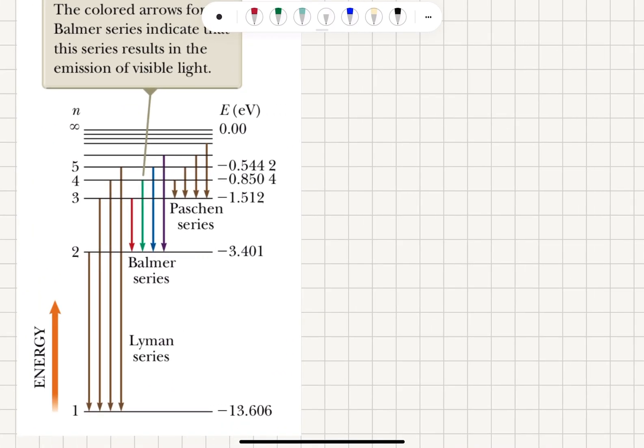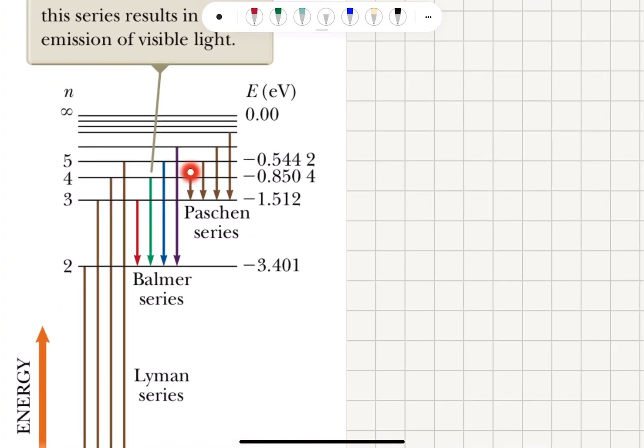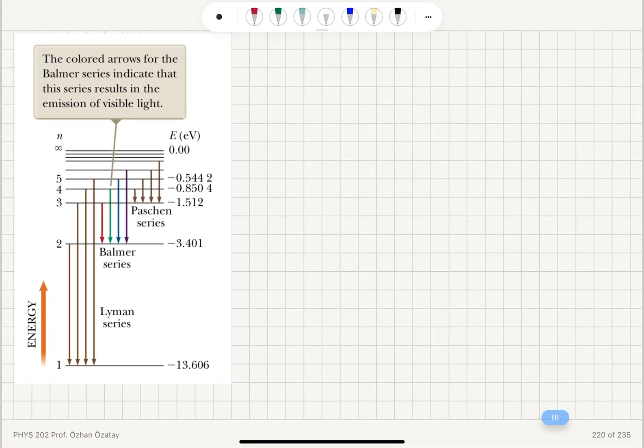If we draw these energy levels, we can see that n equals excitations above n equals 1 that result in emission of the spectra by transitions of electrons from higher energy levels to n equals 1 give us the Lyman series. For transitions from higher energy levels to n equals 2, the energy level is Balmer series, which gives us the visible spectrum. We have transitions from higher energy levels to n equals 3 Paschen series and to n equals 4 Brackett series.